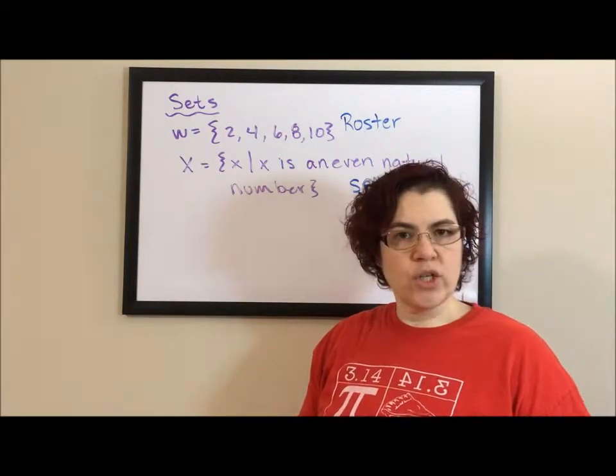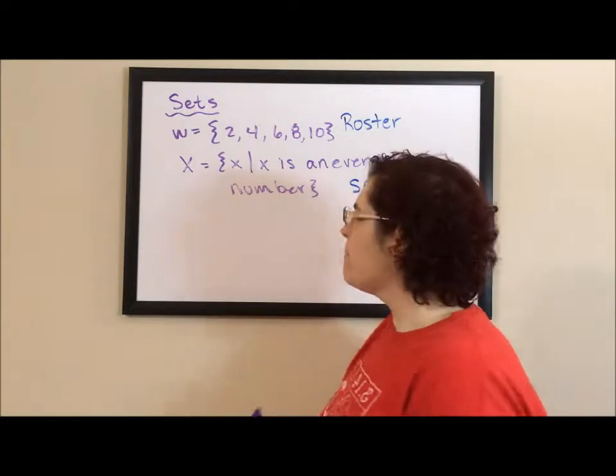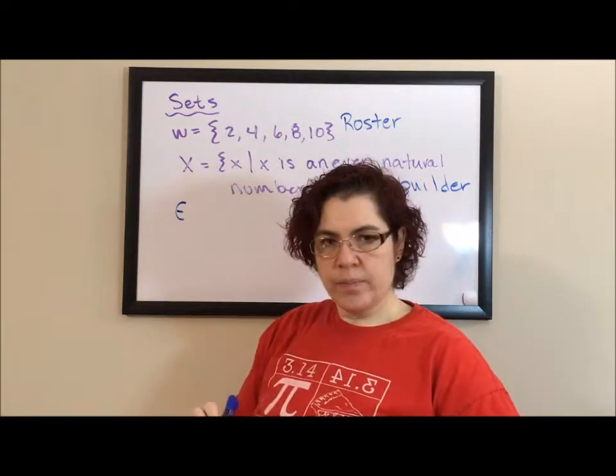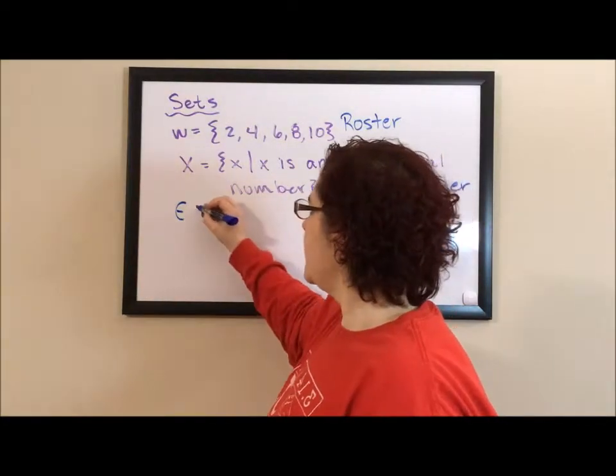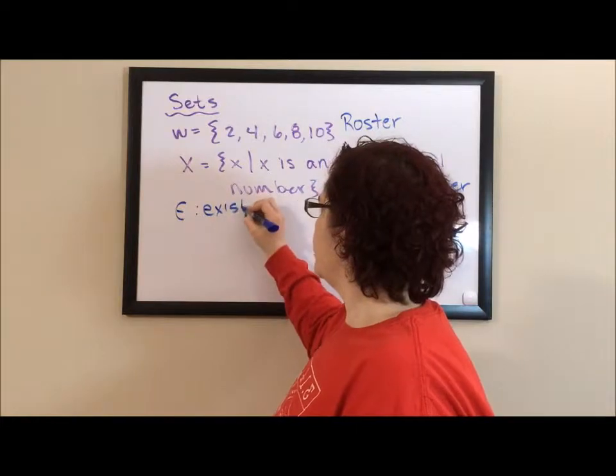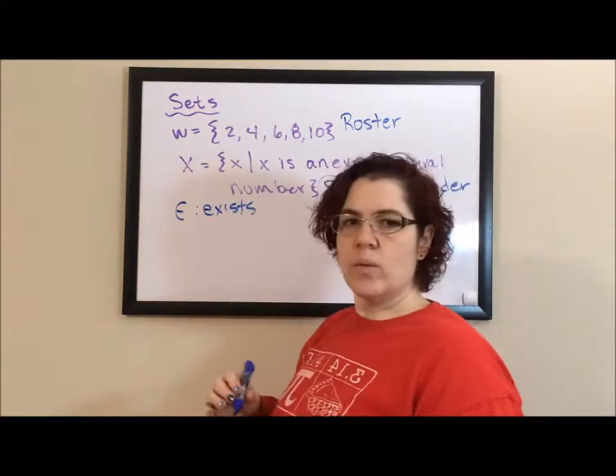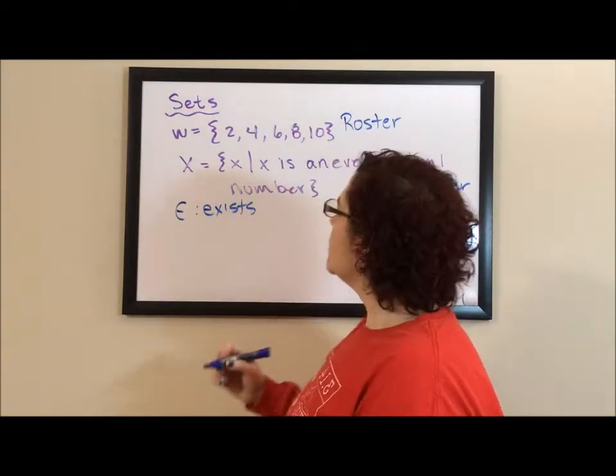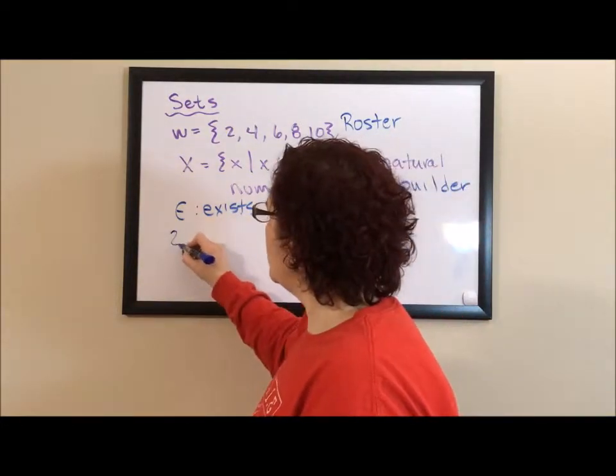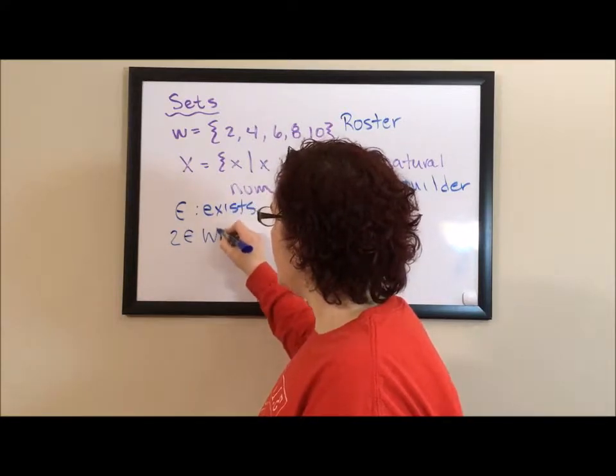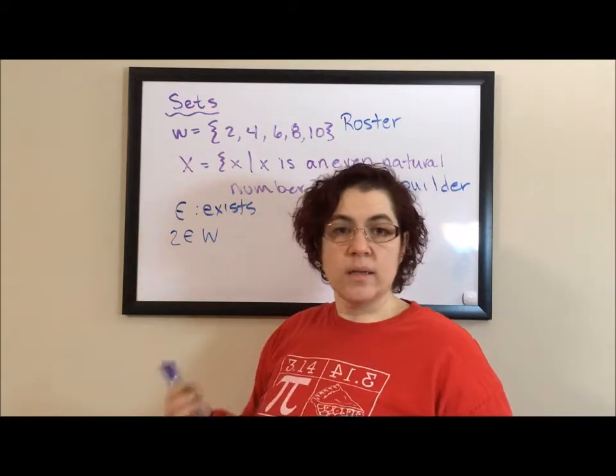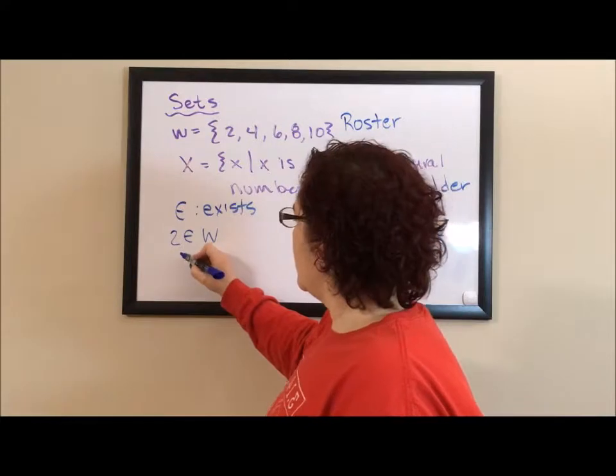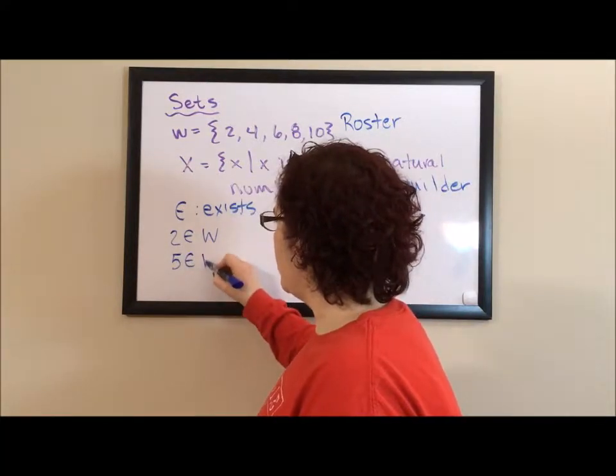Now we need to know a little bit of the notation that goes along with sets. The first is this funky little thing that looks like an E. It translates to exists, and it tells us if an element exists within a set. So I could say 2 exists in W, which means 2 is an element in the set W. I could say 5 exists in W.